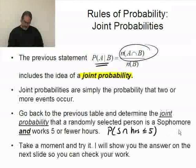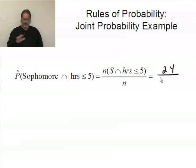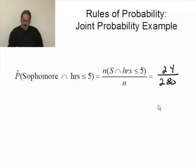So the probability of a sophomore and less than or equal to five hours is the number of ways they both can happen, that was 24, divided by the total in the sample space. Total on that chart was 280. So there's my probability.